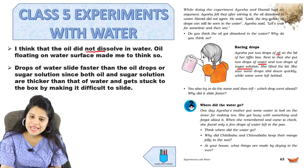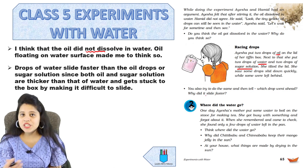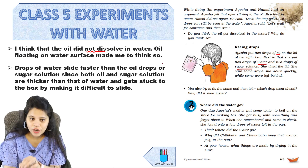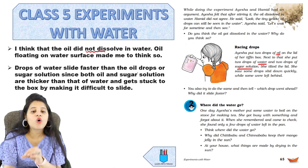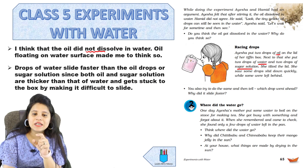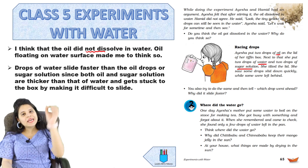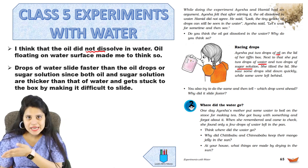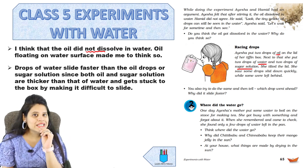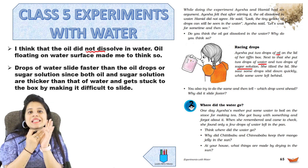You also try to do the same and tell which drop went ahead and why it slid fast. The drop of water slides faster than the oil drop or sugar solution, since both oil and sugar solution are thicker than water and get stuck onto the box, making it difficult to slide. Water goes down quickly, but the sugar solution and oil, being a little sticky and heavy, get stuck onto the lid and take more time to slide down.